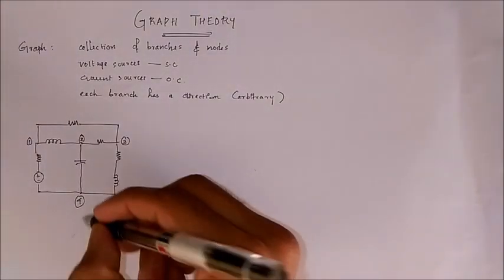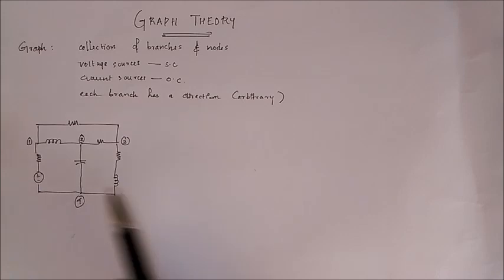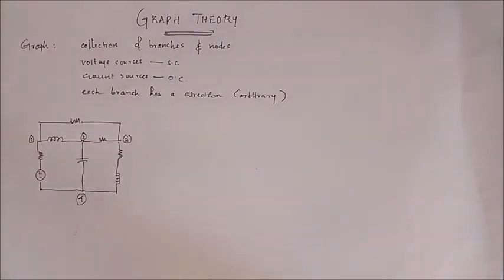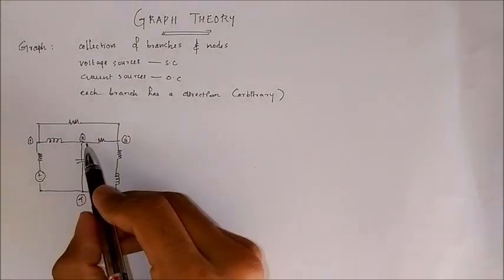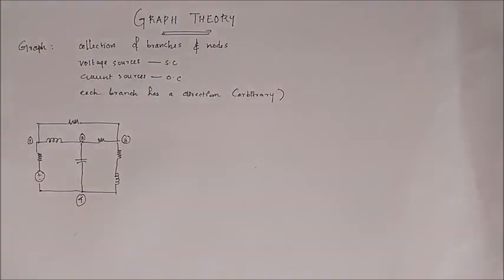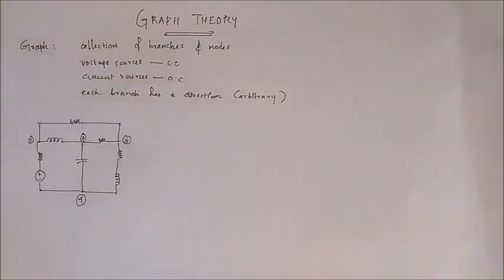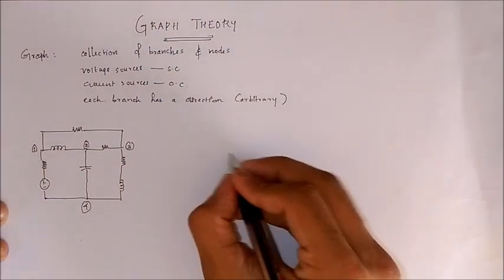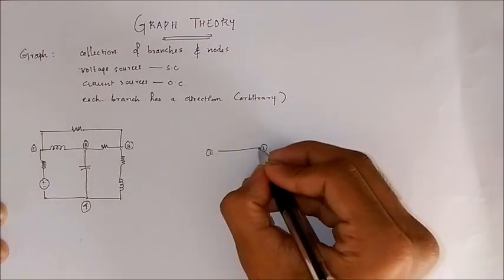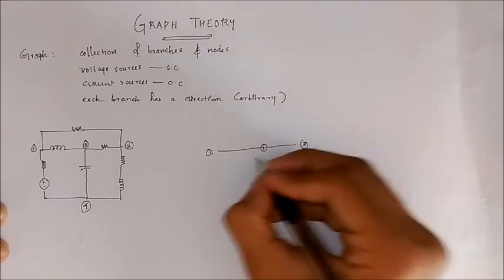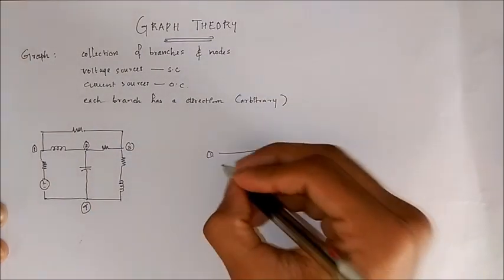Let's consider a circuit like this. As you can see there are resistors, inductors, and capacitors in different branches, but while drawing the graph we do not consider the elements. We just mark the nodes — one, two, three, four — and draw the graph with these nodes and branches.